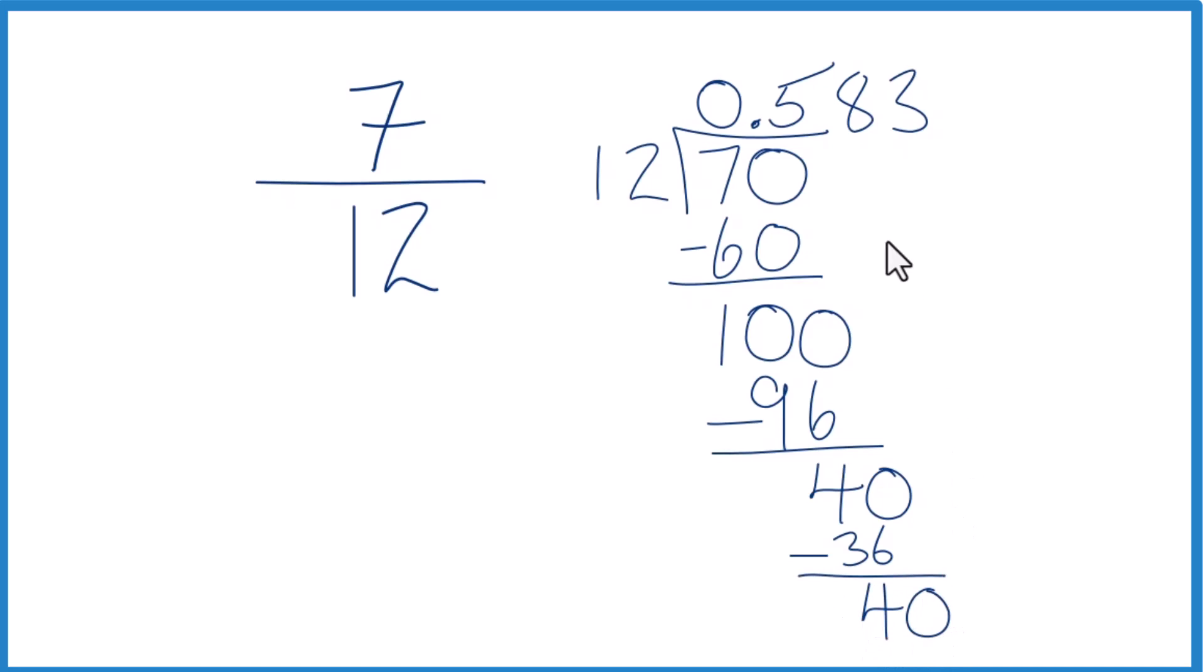Then we call that 40. Move over one. 3 times 12 is 36. When we subtract, we get 4 again. So this 3 is just going to keep repeating.